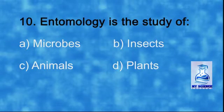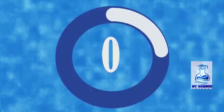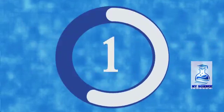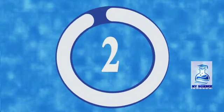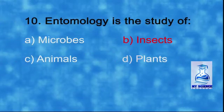Number ten: entomology is the study of — a) microbes, b) insects, c) animals, d) plants. The correct answer is b) insects.